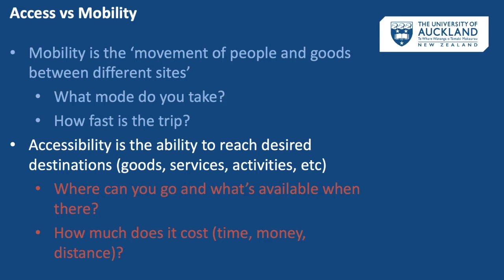That is, the ability to get to goods, services, or different activities. When thinking about accessibility, we often think about where you can go, what's available when you get there, and how much it costs in terms of money, time, and distance. We also think of both these measures at two levels — for mobility, from a personal level.